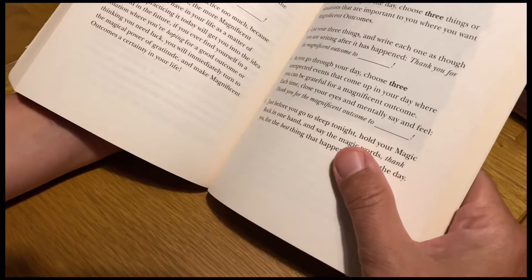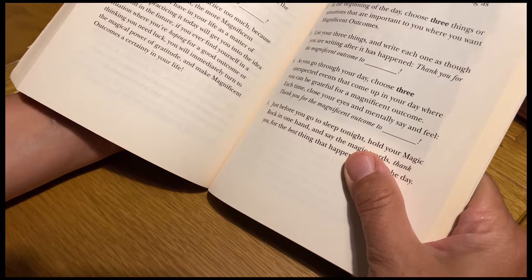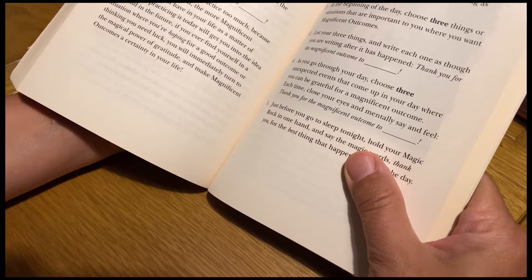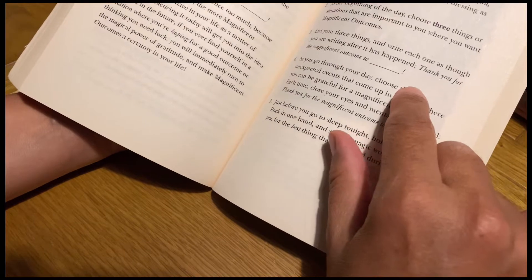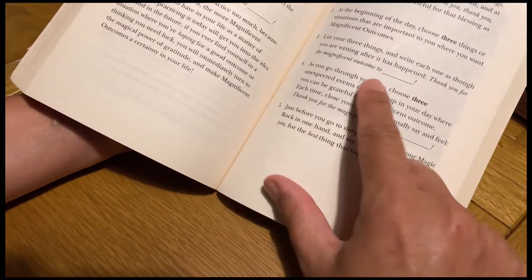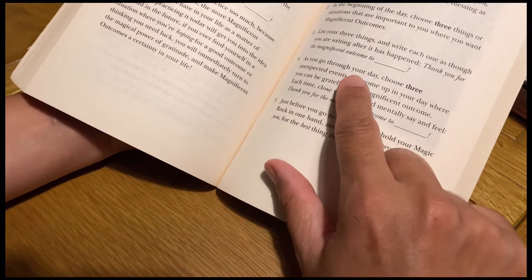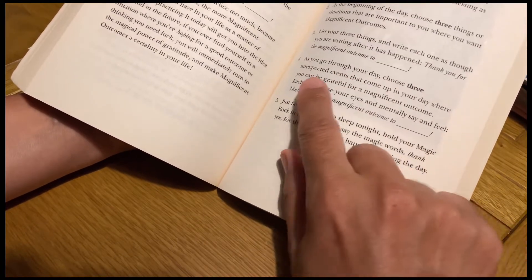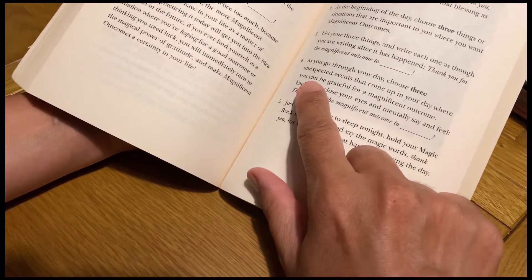And where you want magnificent outcomes, so list out three things and write each of them. And then say thank you for the magnificent outcome to, fill in the blanks. Thank you for the magnificent outcome to, then write down. As you go through your day, choose three unexpected events that come up in your day where you can be grateful for the magnificent outcome.